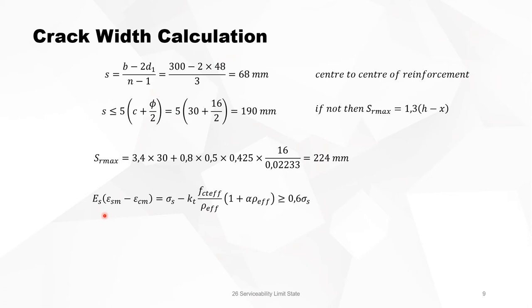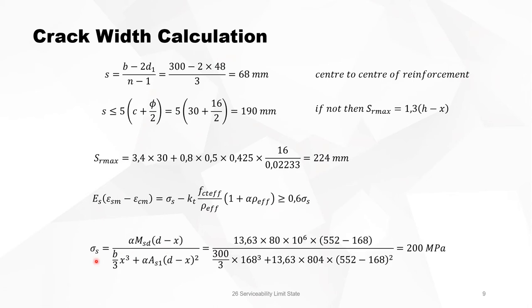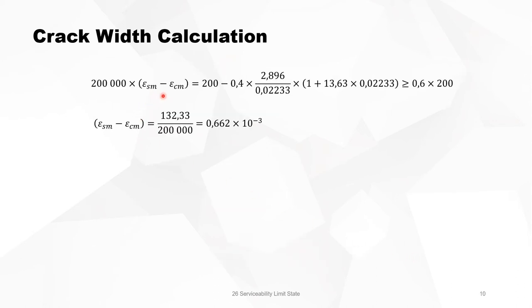The delta epsilon times the modulus of elasticity equals this formula and must be bigger than 0.6 sigma S. We need to calculate sigma S, which is here. Because it's an elastic design, it's easy to calculate sigma S, and we have 200 MPa as a steel stress. We calculate delta epsilon. Everything is known now, and we find that delta epsilon is 0.662 times 10 to the power minus 3. Finally, the crack width is delta epsilon times SRmax, and it gives us 0.15 millimeters. The section with a load of 80 kilonewton meter will have a characteristic crack width of 0.15 millimeters.